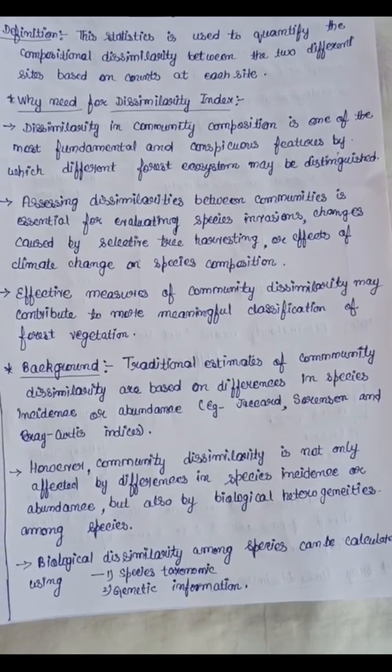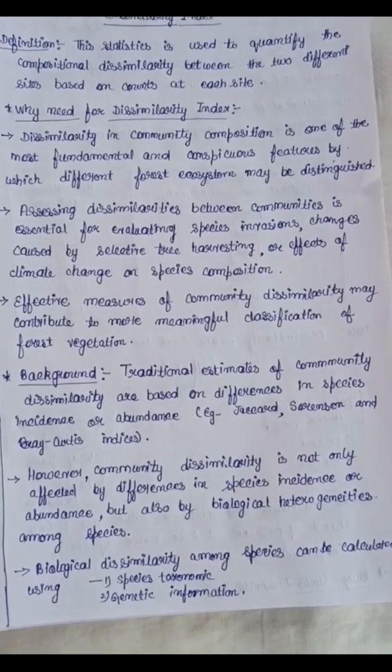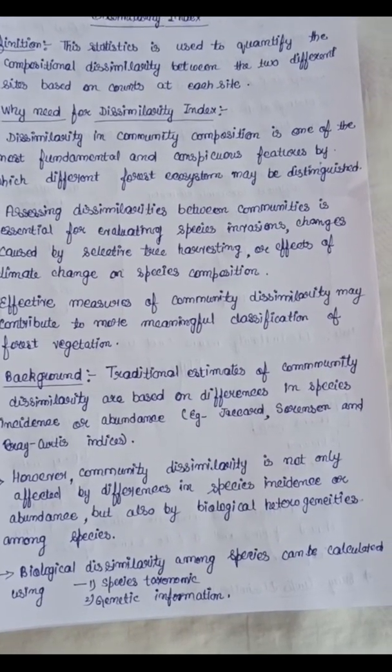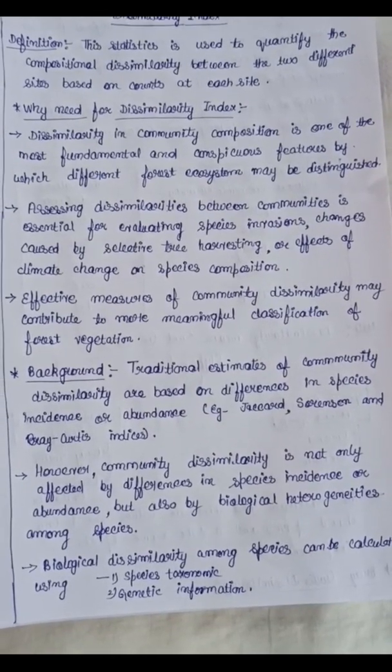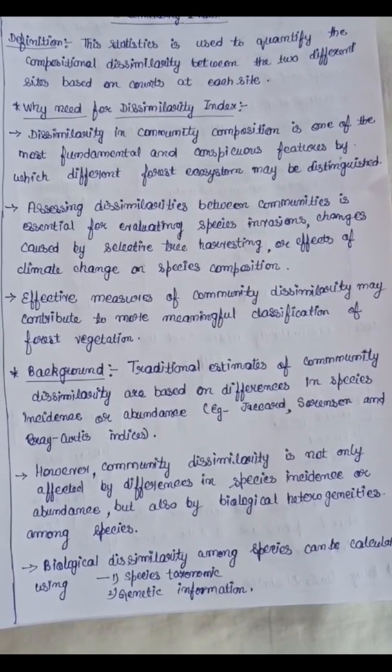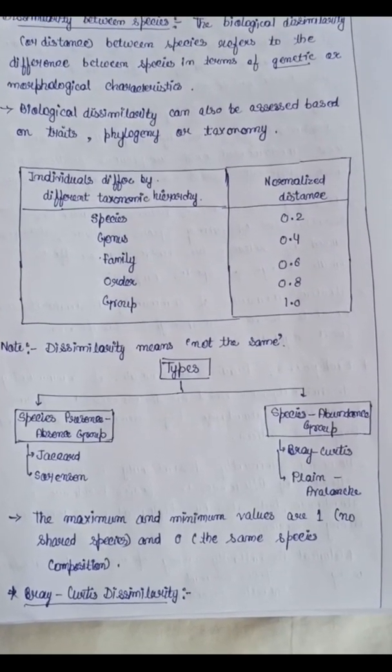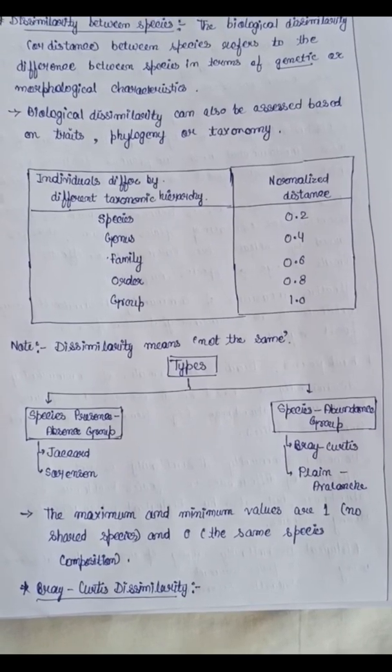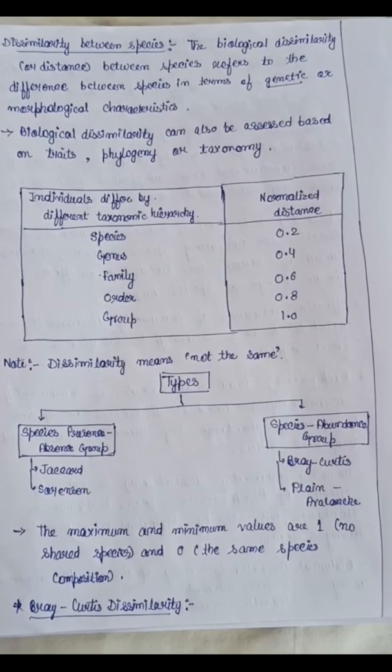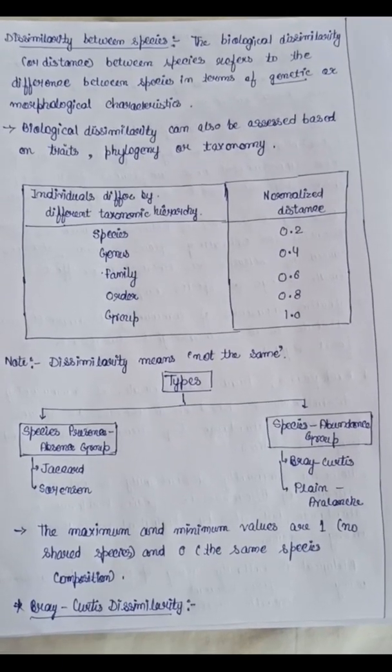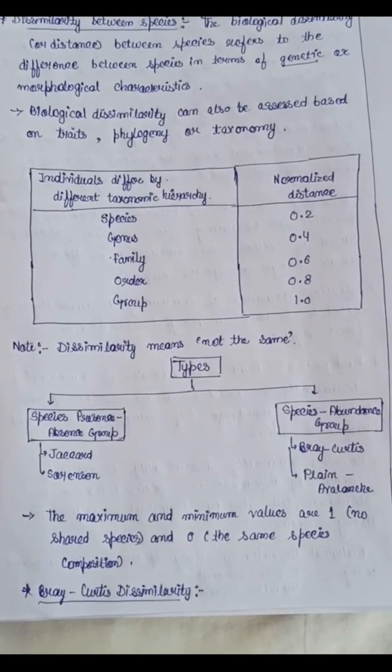This includes the matter of genes or traits that differ. Biological dissimilarity among species can be calculated using species taxonomic information and genetic information. Biological dissimilarity, also known as distance between species, refers to the difference between species in terms of genetic or morphological characters. It can also be assessed based on traits, phylogeny, or taxonomy.